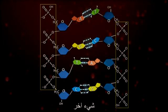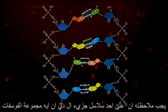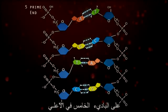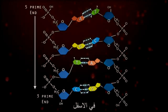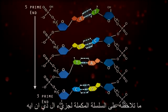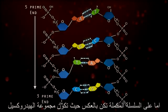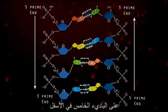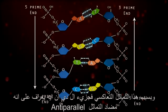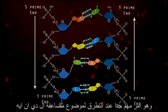Notice that on one strand of the DNA molecule, the phosphate, or 5' end, is on top, and the OH, or 3' end, is on the bottom. On the complementary strand, it's the mirror image: the OH, or 3' end, is up, and the phosphate, or 5' end, is down. Because of the opposite direction of the strands, they are called anti-parallel. This is going to become very important when we study how DNA replicates.